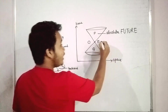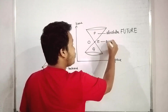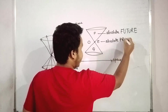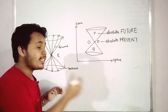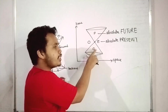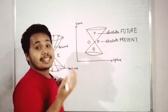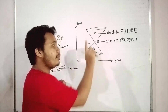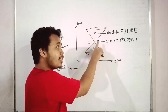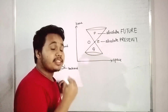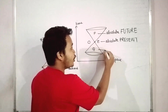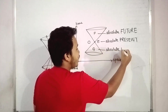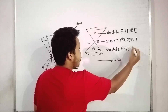Event E is called the absolute present — it is happening at the present moment. You and I will also agree that event Q will always be in the past. That is, event Q occurred first, then event E, then event P — in that sequential order. So event Q is called the absolute past.